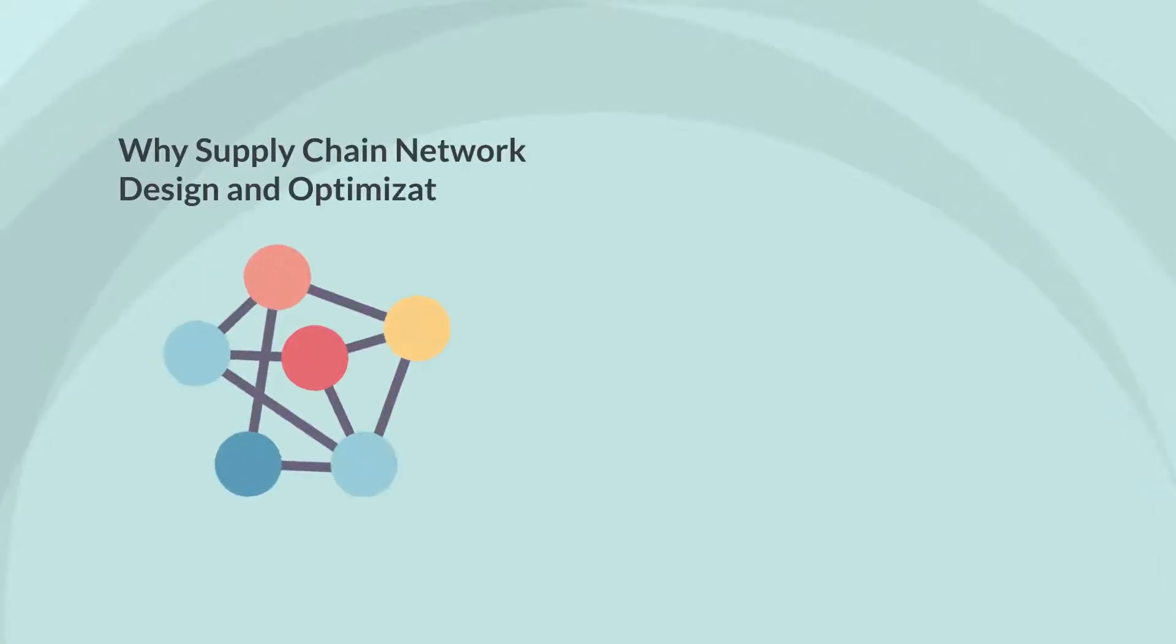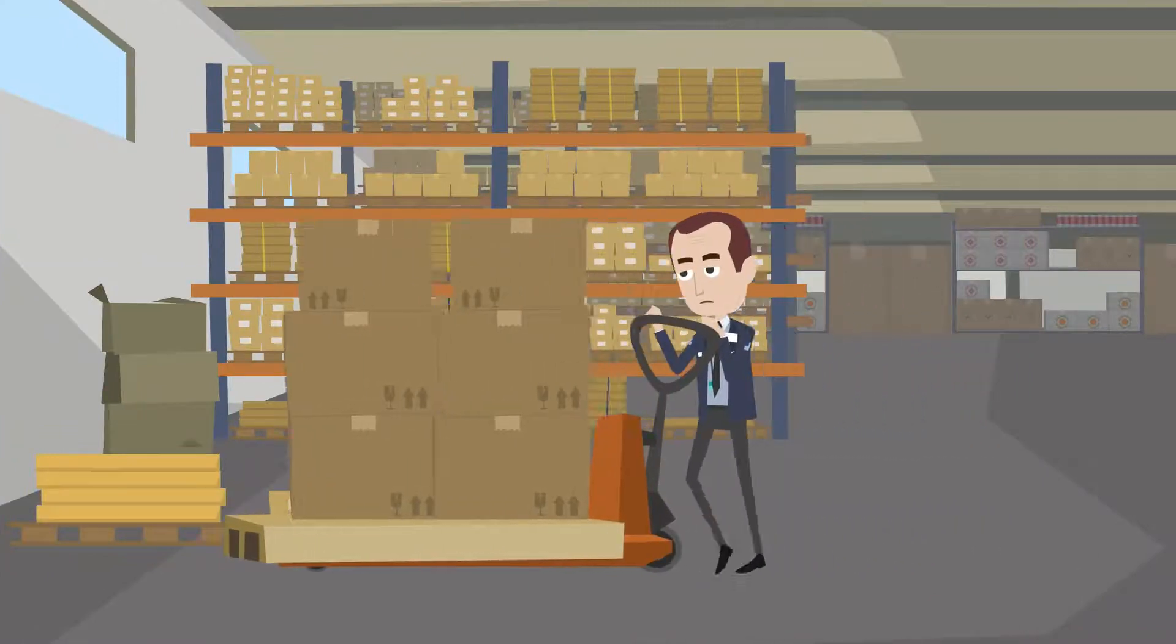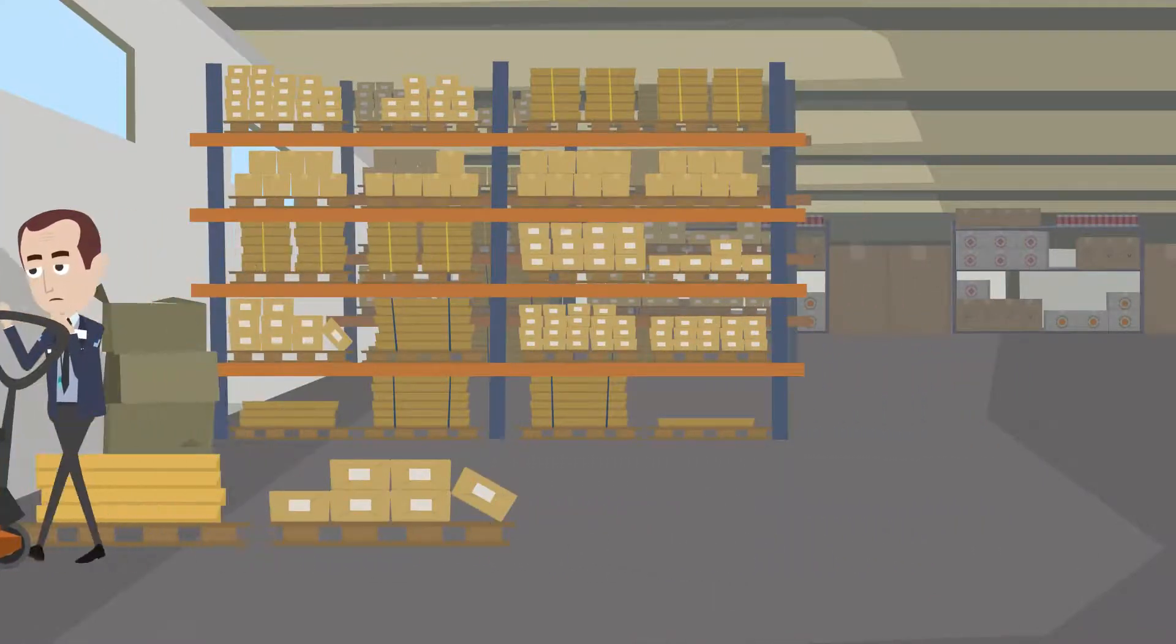But why supply chain network design and optimization? Companies on average spend up to 8% of revenues on their distribution and transportation costs. Changes in suppliers, business growth, and customer demand all impact the network.